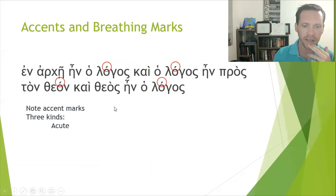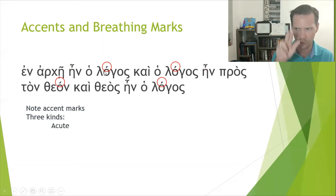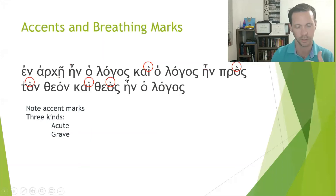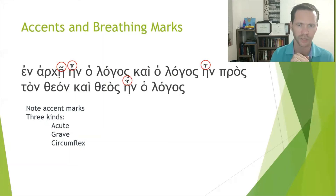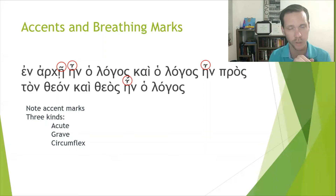There are three kinds of accent marks. For our purposes, they make no difference in meaning. Originally in classical Greek it was a tonal language: if the mark went up, your tone went up (acute); if the mark went down, your tone went down (grave); if the mark went around, your tone went up and down (circumflex). By this point in Greek history it's just about which syllable has the emphasis. The three types are: the acute (going up), the grave (going down), and the circumflex — a tilde or upside-down U shape.